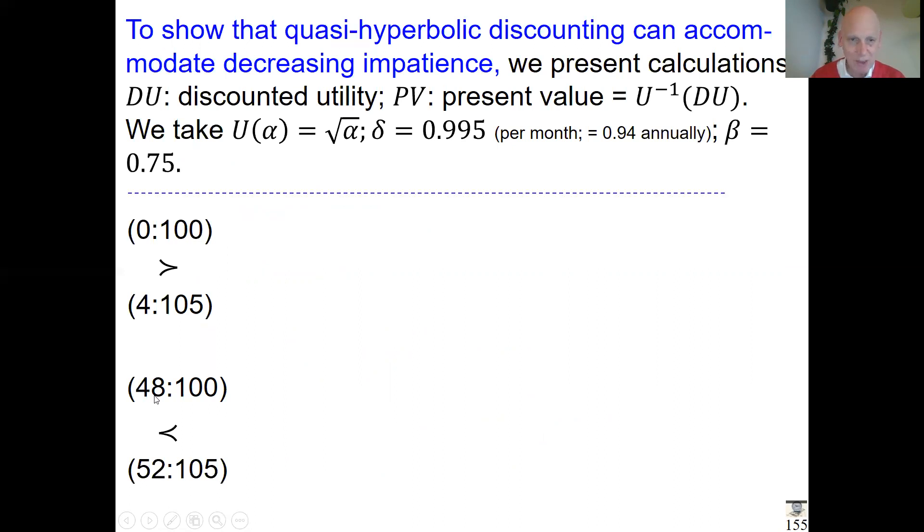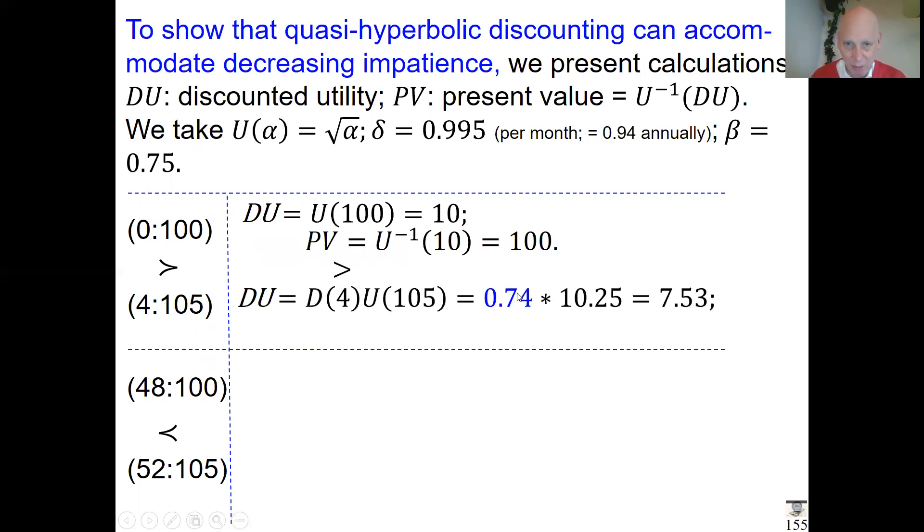The discounted utility of the first one, DU = U(100) = 10, and the present value PV = δ^(-1)(10) = 100. For the second one, the discount weight is already 0.74, so only four months and already more than three-quarters is discounted. That's due to that beta of 0.75 and a little bit because it's four months. Because of the strong present effect, the present value is 56—waiting four months for 105 means it's divided by almost two.